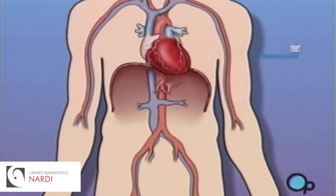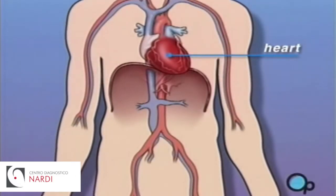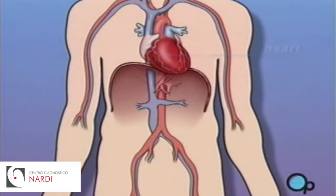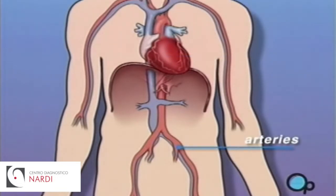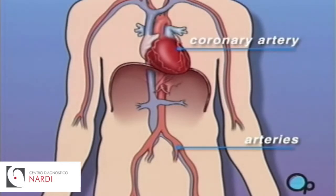The heart is located in the center of the chest. Its job is to keep blood continually circulating throughout the body. The blood vessels that supply the body with oxygen-rich blood are called arteries. The arteries that supply blood to the heart muscle itself are called coronary arteries.